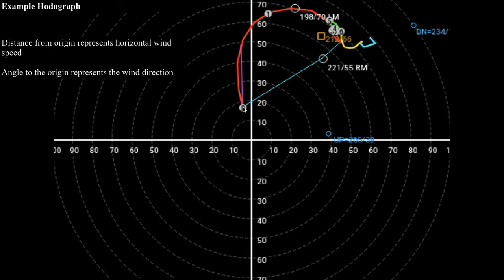So if we take a look at the base of the hodograph, which is at the lowest level that we have data for, if we take that particular point and draw a line, you can see I've got a line that points in the south-southeast direction. So that tells me that my wind is coming from the south-southeast direction. It's a south-southeasterly wind.